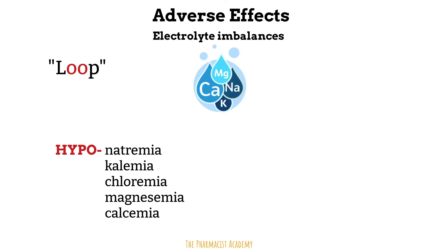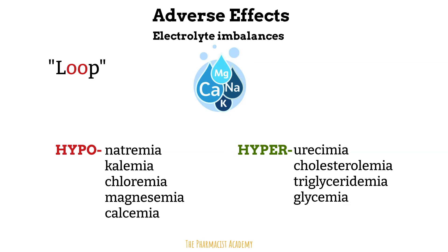Loop diuretics conversely also increase the blood levels of other things, though these are not really electrolytes. These include uric acid — so hyperuricemia — cholesterol, triglycerides, and hyperglycemia. The hyperuricemia is due to loop diuretics inhibiting the secretion of uric acid from the blood into the filtrate, which can lead to an acute gout attack or flare, so it's best to avoid loop diuretics in patients with gout. They have also been found to cause a small acute increase in cholesterol and triglycerides, possibly due to the increased concentration of blood products from free water loss. The effect on blood sugar levels and diabetes risk is not well defined — studies have been mixed and inconsistent, and in long-term therapy the effect does not appear to be significant.